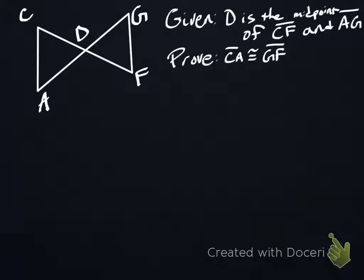Take a look at the figure there and the given. We're given that D is the midpoint of CF and AG. And that's it, that's all we're given.